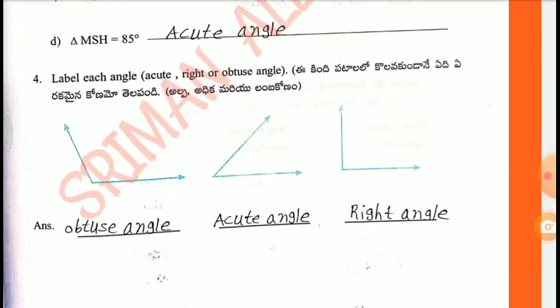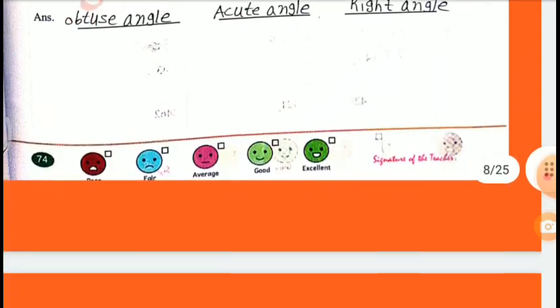Fourth one: Label each angle as acute, right, or obtuse. An angle greater than 90 degrees is called an obtuse angle — first one is obtuse angle. An angle less than 90 degrees is called an acute angle — second one is acute angle. Third one is a right angle, 90 degrees.